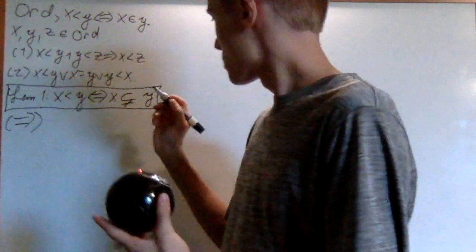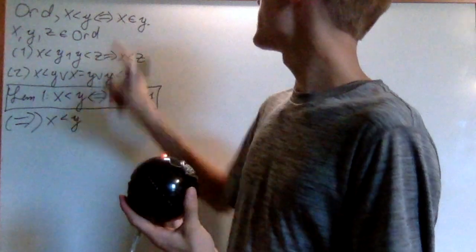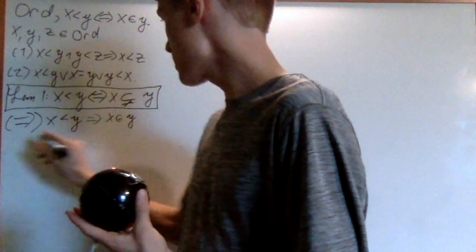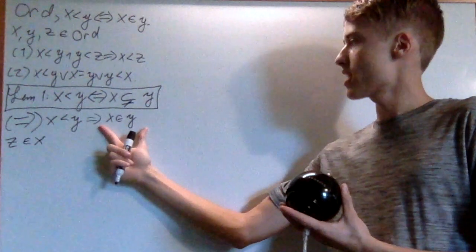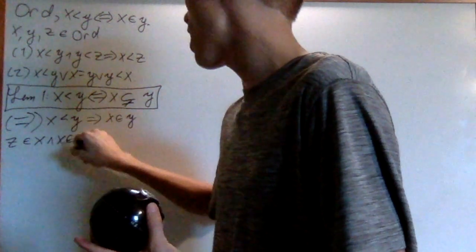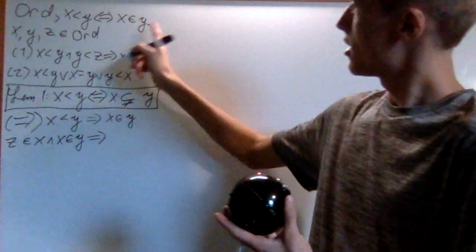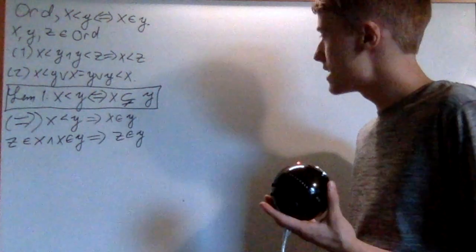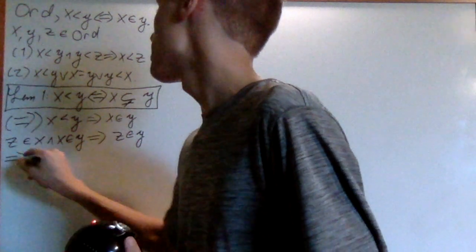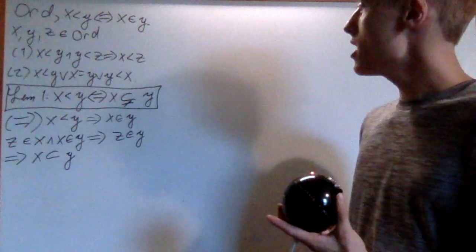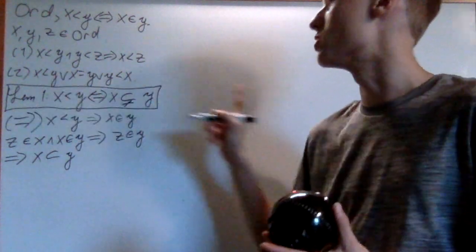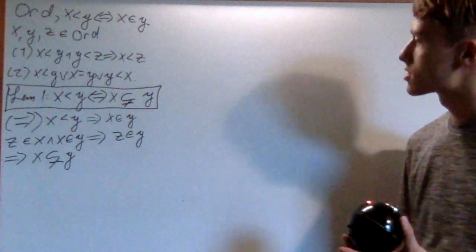Let's prove the forward direction. We assume x is less than y, which by definition means x is an element of y. Now suppose that z is an element of x. Using both facts, z is an element of x and x is an element of y, which then means that z is an element of y. So if z is an element of x, then z is an element of y, which means that x is a subset of y. And x cannot be equal to y because it's less than y, so we can add that it's a proper subset.